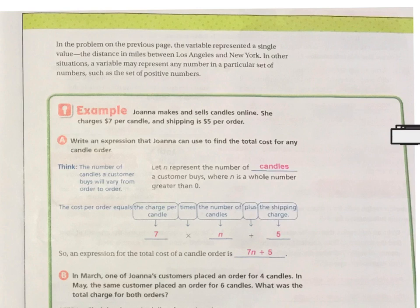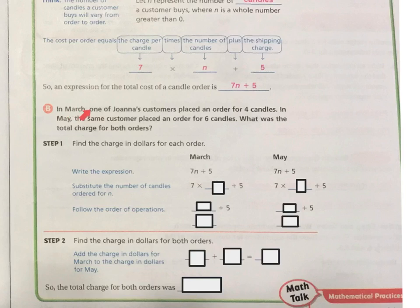So it's the charge per candle, which is $7, times the number of candles, plus the $5 shipping charge. In March, one of Joanna's customers placed an order for 4 candles. In May, the same customer placed an order for 6 candles. What was the total charge for both orders?